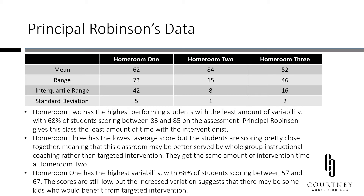Homeroom 3 has the lowest average score of all three, so at first glance you might think that this class needs the most targeted intervention. However, the standard deviation and interquartile range are low, meaning that most students scored around that 52% mark. This class would be better served by some regular visits from an instructional coach who can help this teacher improve their whole group teaching skills.